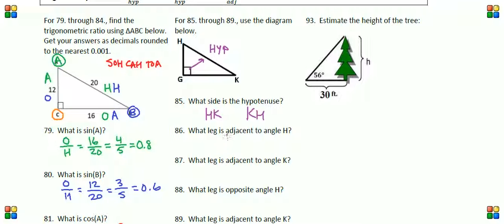Which leg is adjacent to angle H? We'll take a look at angle H. The hypotenuse will never be adjacent; it's always the hypotenuse. The adjacent side is the leg that is touching angle H, and that would be HG. You could also call that side GH.